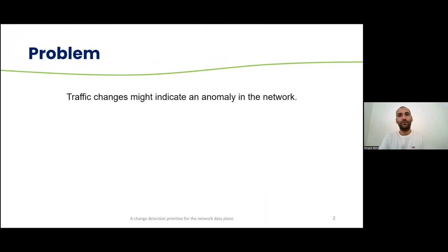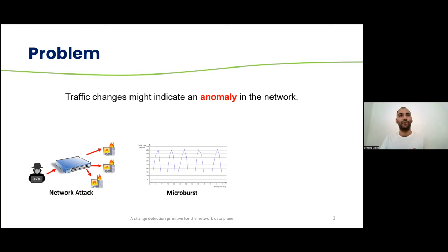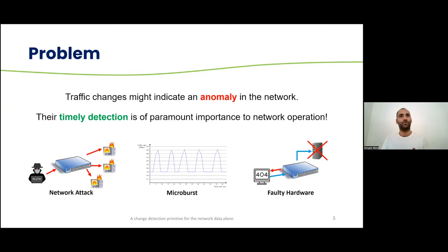Traffic changes are normal in any functioning network setup, and often they are not associated with any undesired behaviors. However, there is a subset of these changes called anomalies that might mean that there is something wrong in the network. It might mean that there is an attack happening, or it might mean that there are microbursts happening in the network, or it might mean that some piece of hardware has failed. So the timely detection of these kinds of changes is very important for network operation.